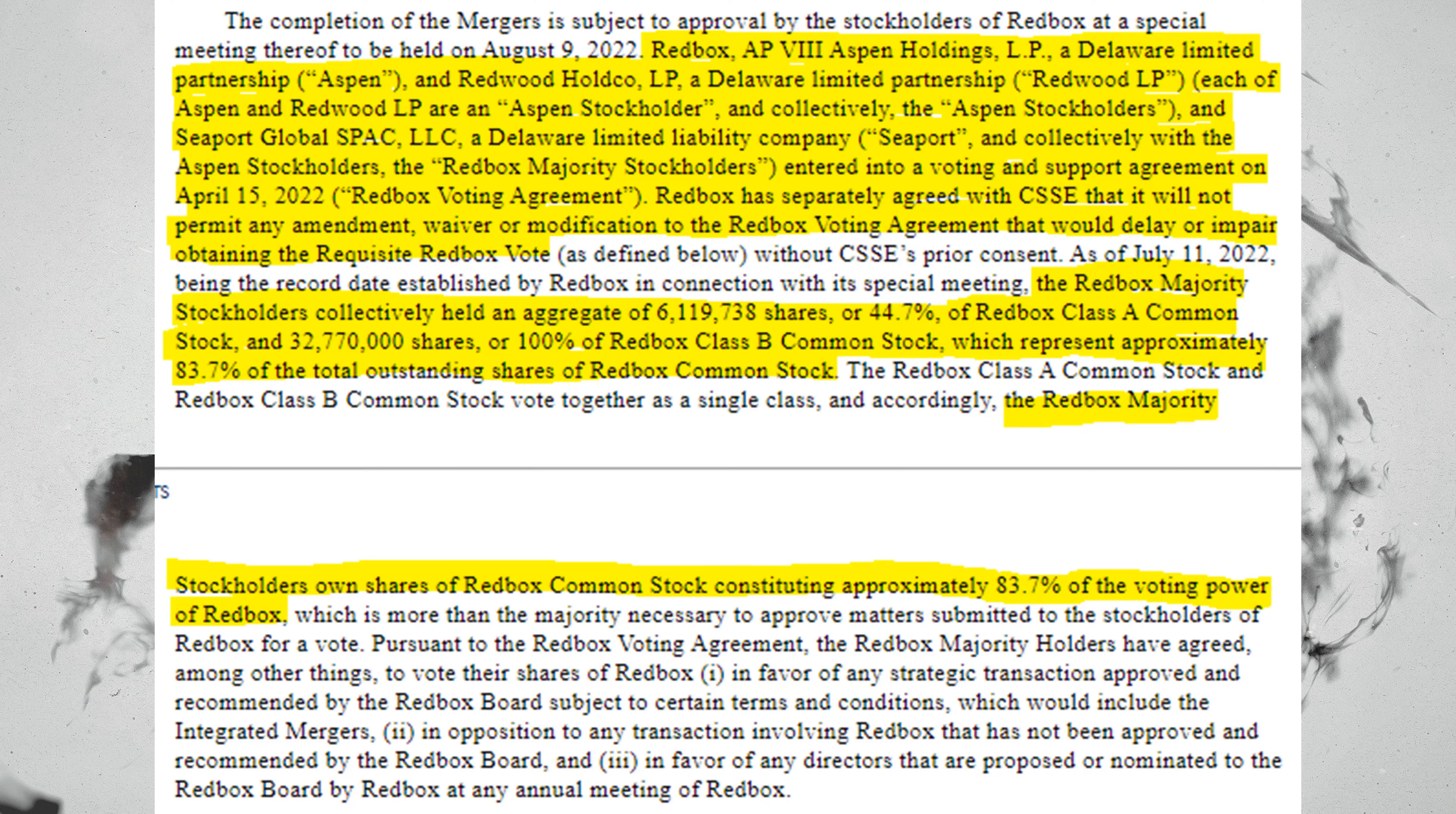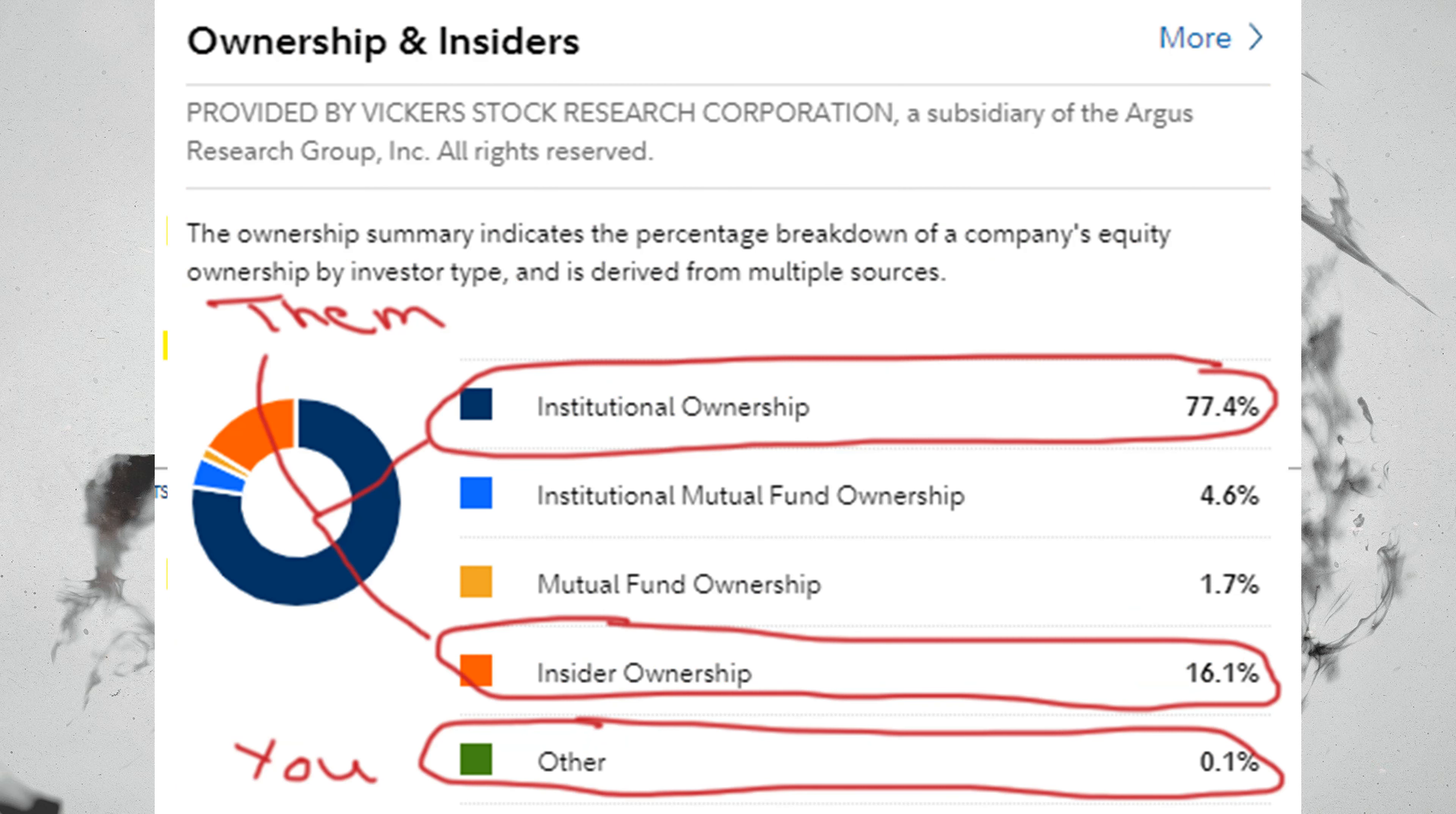The second reason is that even though Redbox's vote is set to come up this August, it has a 79% institutional ownership inside the company. 16% of ownership is owned by insiders that are members of or have officer positions inside the company, and only a measly 0.1% are retail investors.